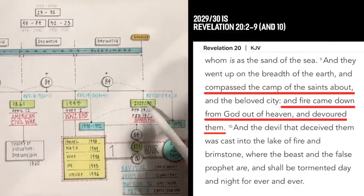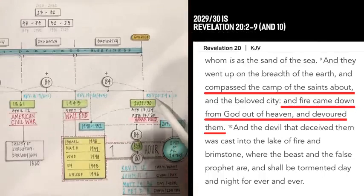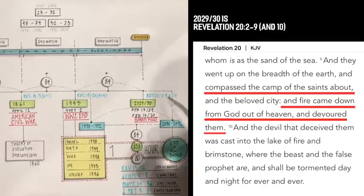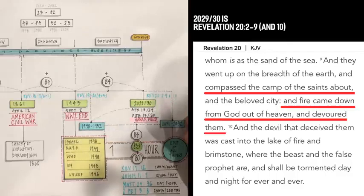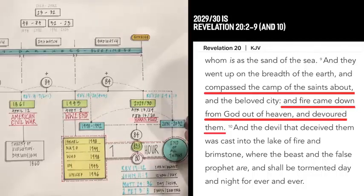And the last one, 20.29 to 20.30, is Revelation 20:2-9 and verse 10. We're just going to look at verse 9 and 10, which says, and they went up on the breadth of the earth and came past the camp of the saints about and the beloved city. And fire came down from God out of heaven and devoured them. And the devil that deceived them was cast into the lake of fire and brimstone, where the beast and the false prophet are, and shall be tormented day and night forever and ever.